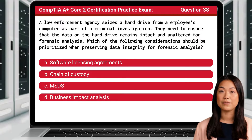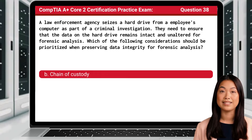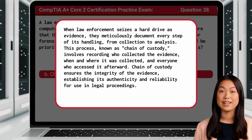Question 38. A law enforcement agency seizes a hard drive from an employee's computer as part of a criminal investigation. They need to ensure that the data on the hard drive remains intact and unaltered for forensic analysis. Which of the following considerations should be prioritized when preserving data integrity for forensic analysis? The answer is B: Chain of Custody. When law enforcement seizes a hard drive as evidence, they meticulously document every step of its handling, from collection to analysis. This process, known as Chain of Custody, involves recording who collected the evidence, when and where it was collected, and everyone who accessed it afterward. Chain of Custody ensures the integrity of the evidence, establishing its authenticity and reliability for use in legal proceedings.